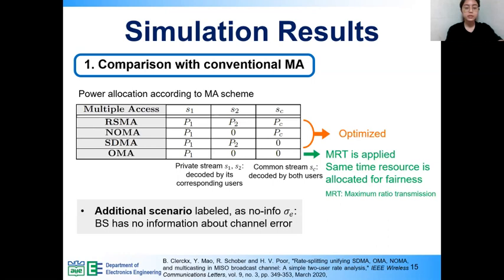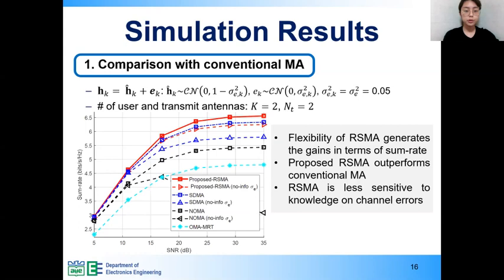No-info-sigma-E labels of figure in next page indicate that the base station has no information about channel error. This figure shows sum rate according to SNR when base station has two antennas and channel error variance is 0.05. When using GMI as the rate on imperfect CSI, the user does not have actual channel, so the user treats signal associated with the channel error as interference. So when SNR increase, the rates are saturated because the interference from channel error also increased as the desired signal transmit power is increased. As shown in figure, regardless of the presence or absence of error information, RSMA has better performance than other multiple access schemes.